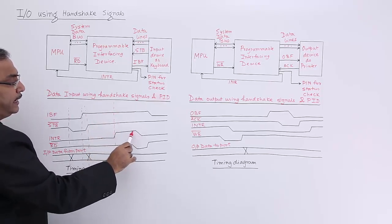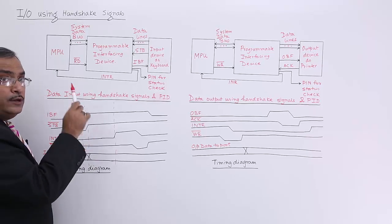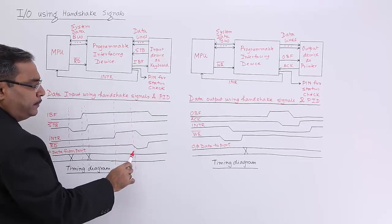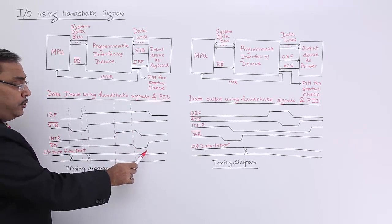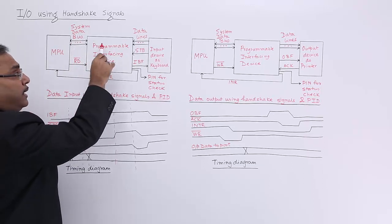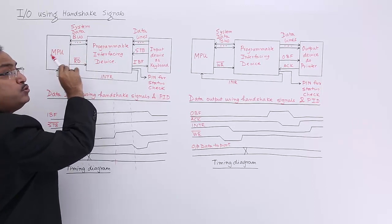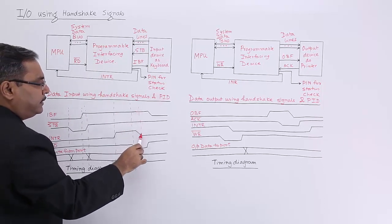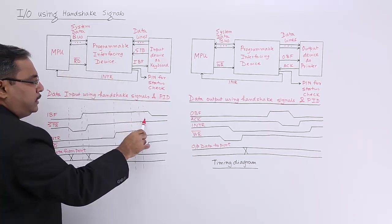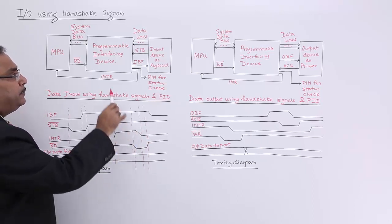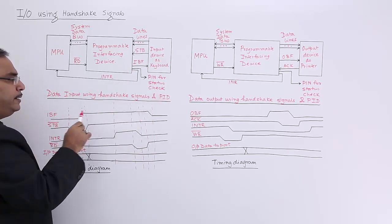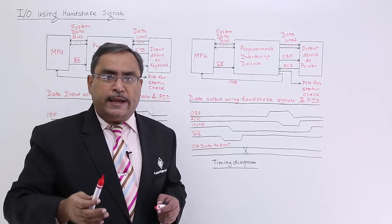The interrupt request is active high, indicating to the MPU that a new byte is waiting. The MPU finds time and makes the RD-bar line enabled — active low. RD-bar is enabled to read the data from the port register through the system data bus. The PID understands MPU is doing its job, so it makes the interrupt request line disabled. After reading the byte, RD-bar is disabled, meaning the data has been read. Then the input buffer full line is disabled, completing the full cycle.